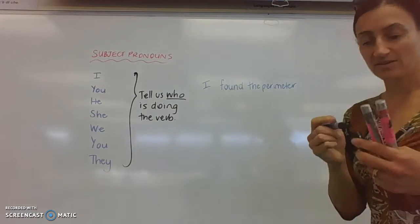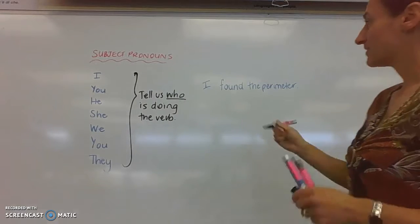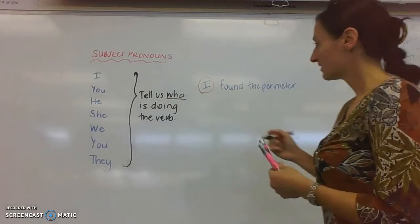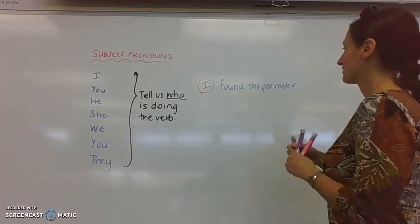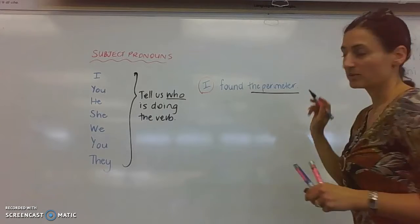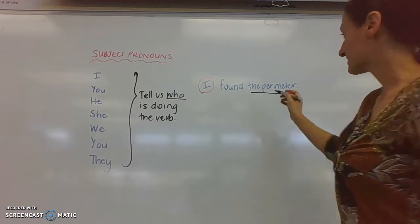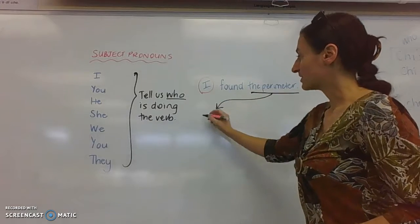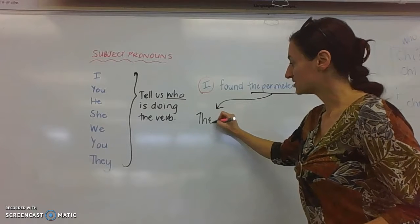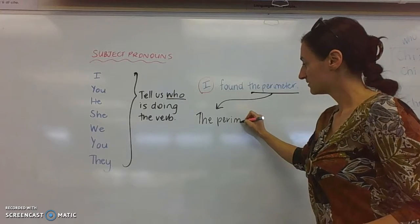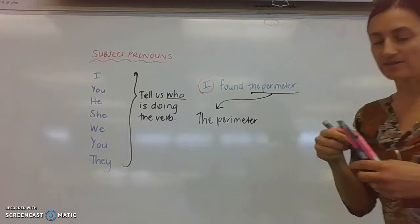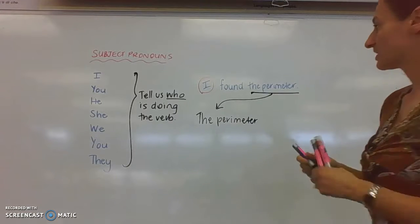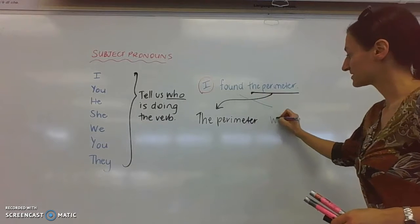Okay. The subject pronoun there is I and the object is the perimeter. We talked about making the object the subject. So the perimeter became the new subject and found became was found